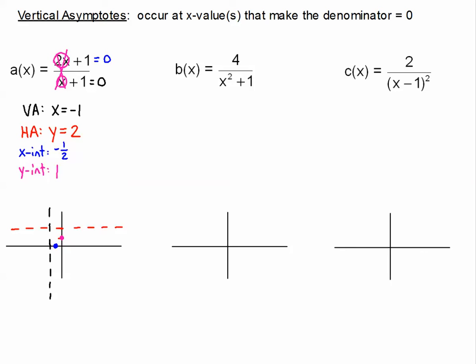I want you to be able to find all of those things for right now. I'm going to show you what the graph looks like, but the point of this lesson is not to graph yet — we will be graphing in our next lesson. I just want to have the graph there as a visual. I want you to be able to find the information: the two asymptotes and the two intercepts.